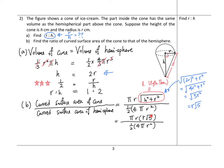Substituting back, the ratio becomes π r · r√5 over 2πr². Cancelling π and r, and simplifying the 2, the final answer is √5 over 2. Therefore the required ratio is √5 : 2.